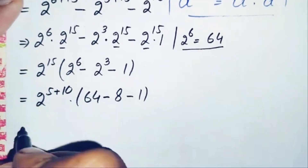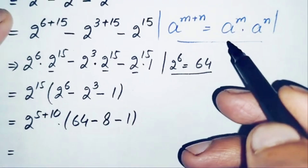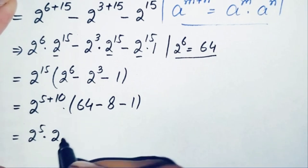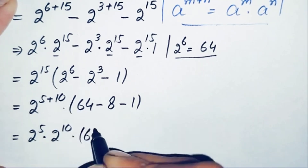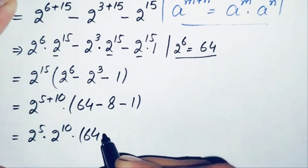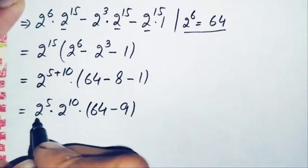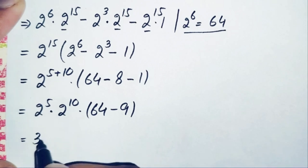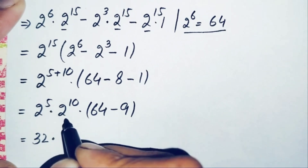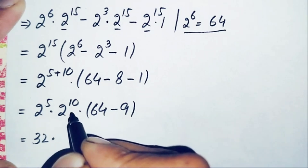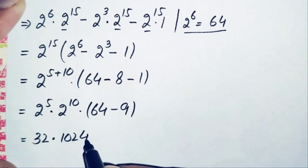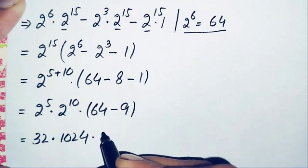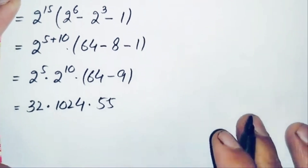Let's simplify further. We split 2 raised to power 15 as 2 raised to power 5 times 2 raised to power 10. Inside the bracket, 64 minus 8 minus 1 gives 55. Substituting, 2 raised to power 5 equals 32, and 2 raised to power 10 equals 1024, which is a very famous number we use often. So the expression becomes 32 times 1024 times 55.